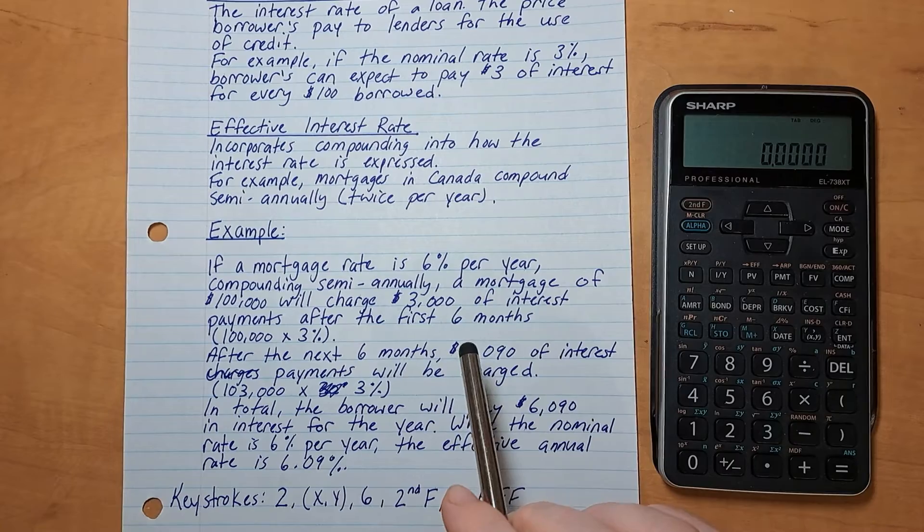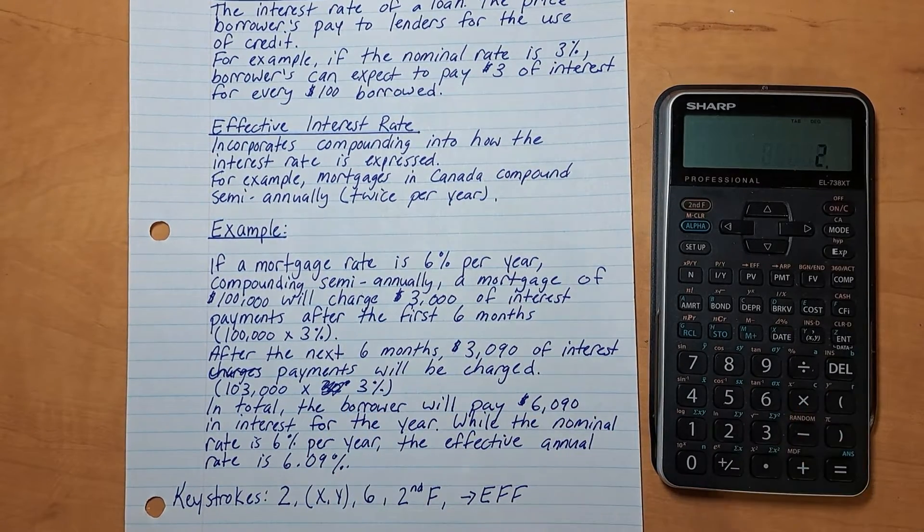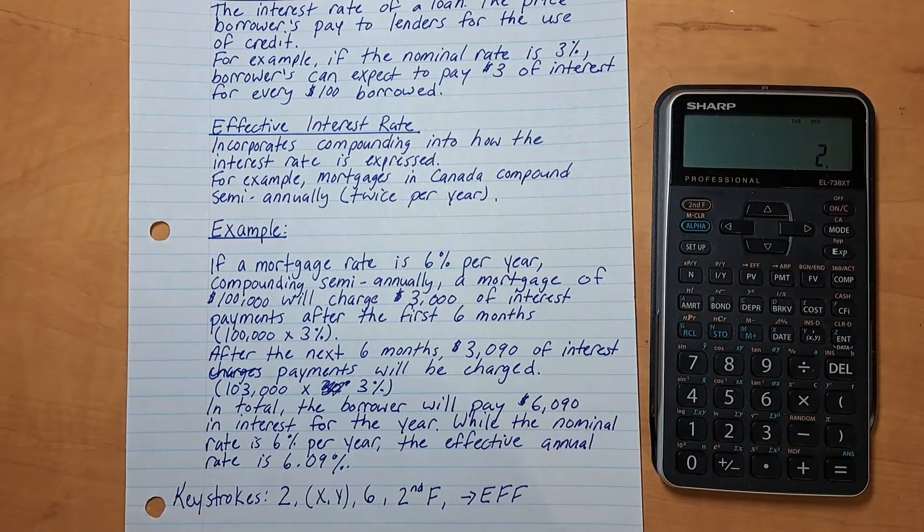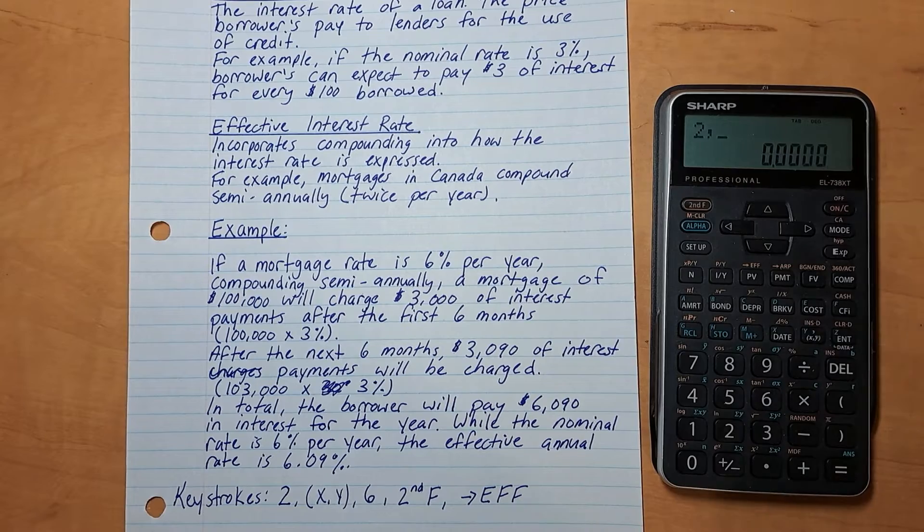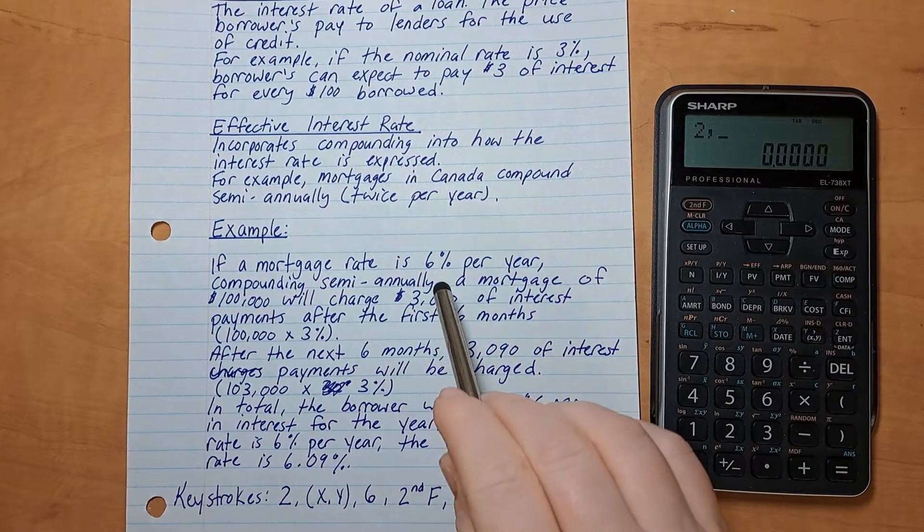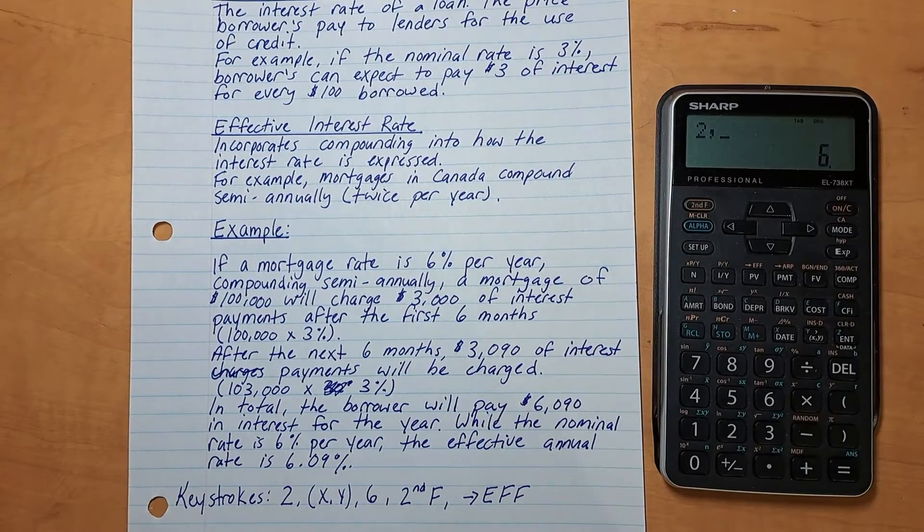Since the compounding is semi-annually, the first number is two—it's twice per year. Then you hit this XY button here, right there. And the interest rate is 6%, so six is the next value.